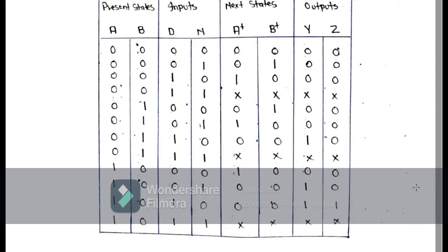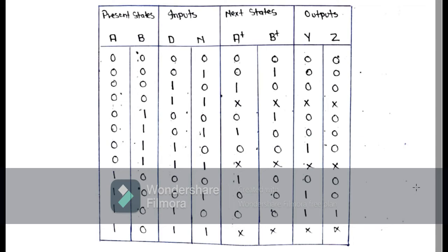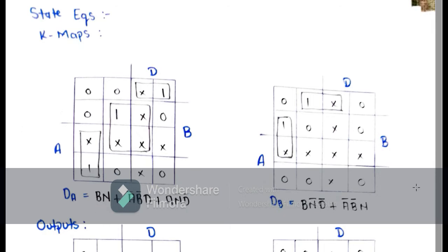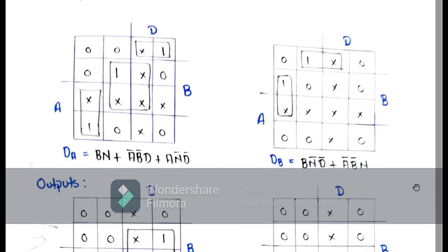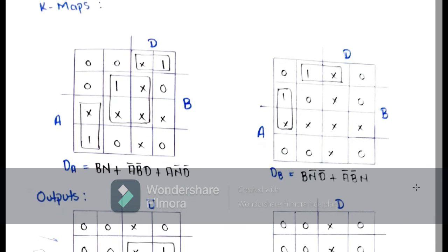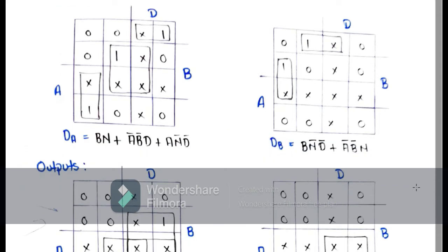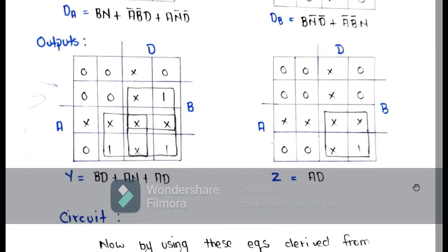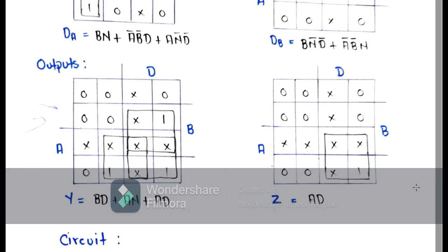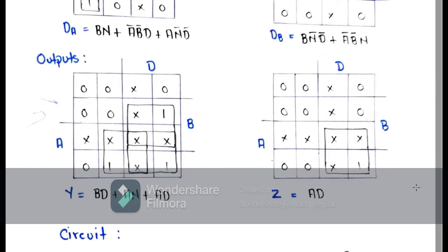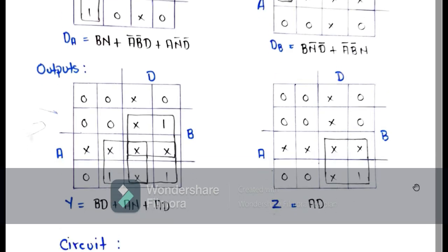After the state table we have to make the K-maps for output Y and output Z to derive the equations to make the circuit. Here you can see the K-maps for the next states and for outputs Y and Z. On the upper left side you can see the K-map for DA and on the right side the equation for DB. You can also see the output equations for Y and Z, and you can verify those inputs from the state diagram and from the K-maps. After that we have to make the circuit of the vending machine on Proteus using these equations.